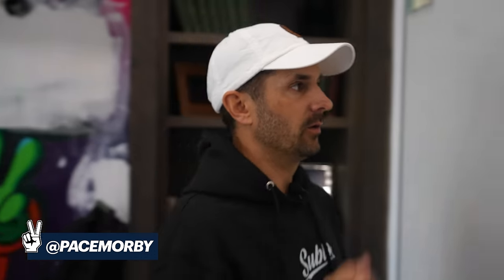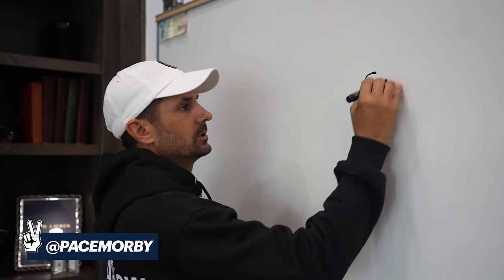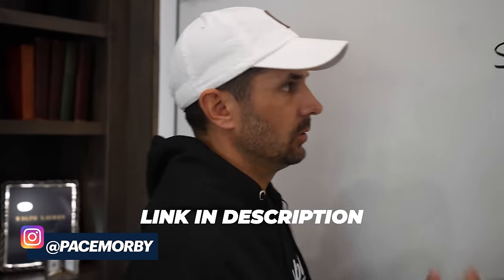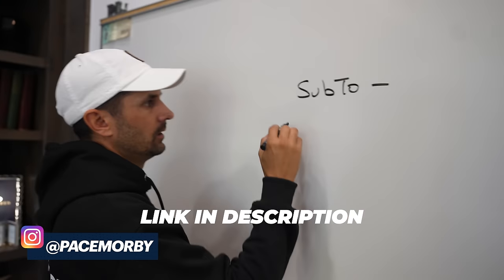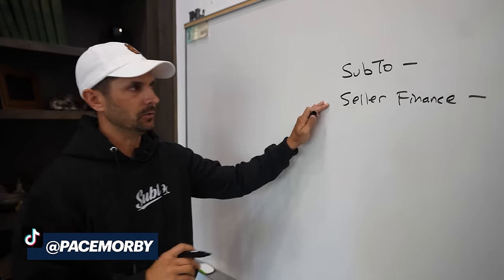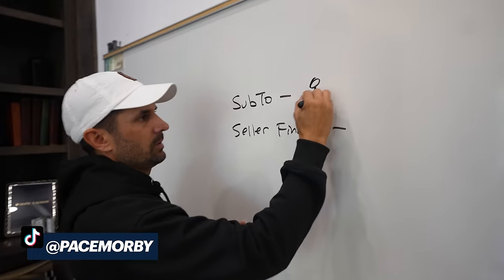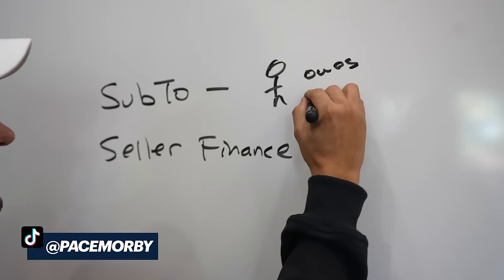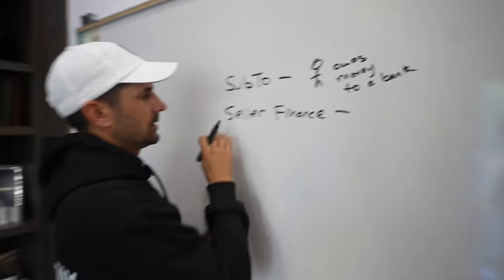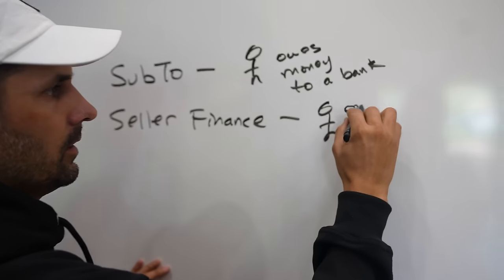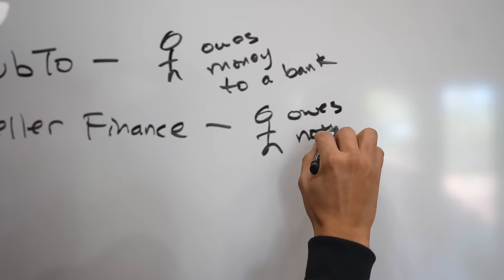Executory contracts are very powerful. You guys know sub-two — if you don't, go watch our videos on sub-two or subject-to seller finance. The difference between these two is that in subject-to, the person you're buying the property from actually owes money to a bank. In seller finance, the seller or owner you're buying from owes nothing to anybody — the seller is financing you.